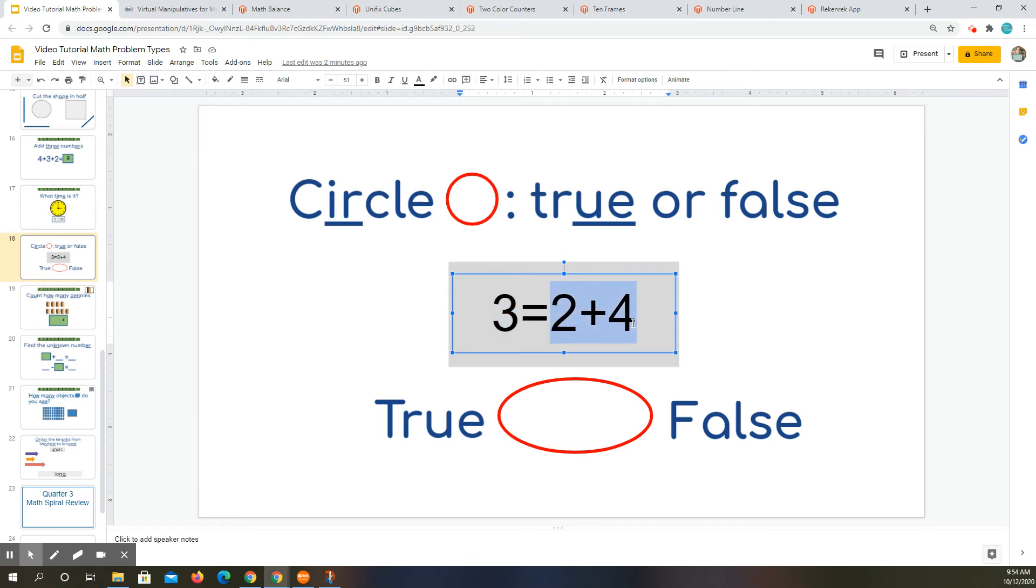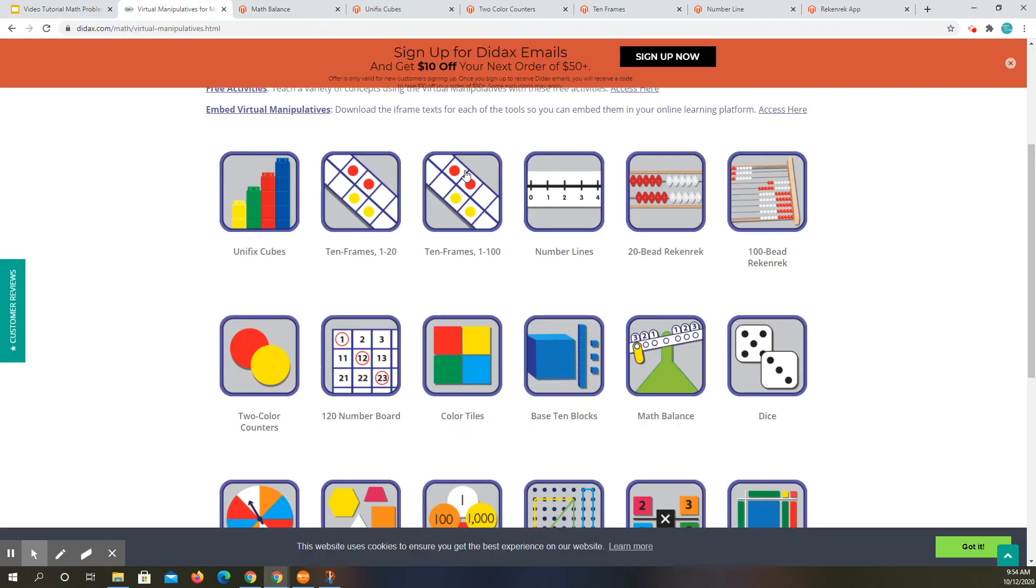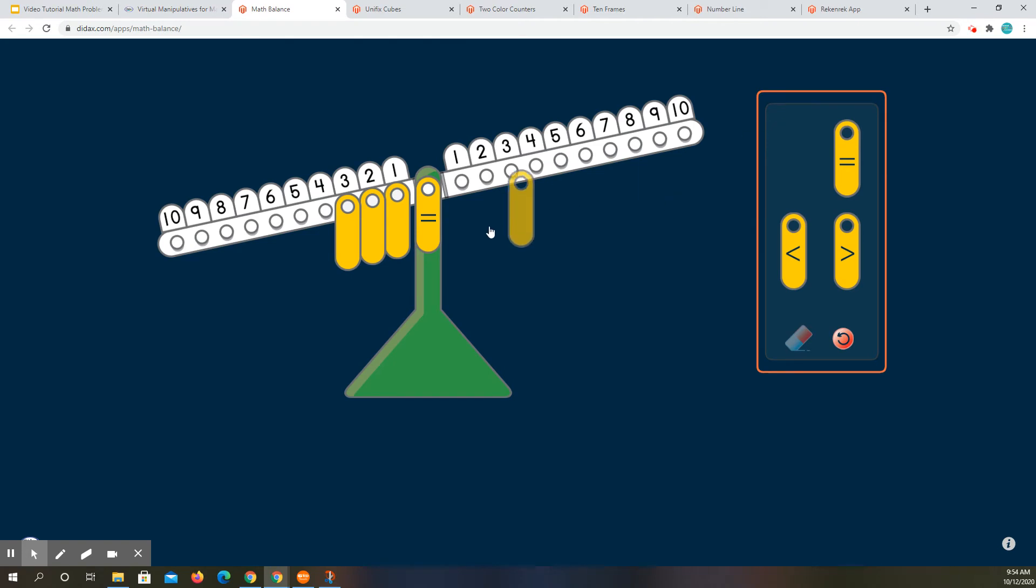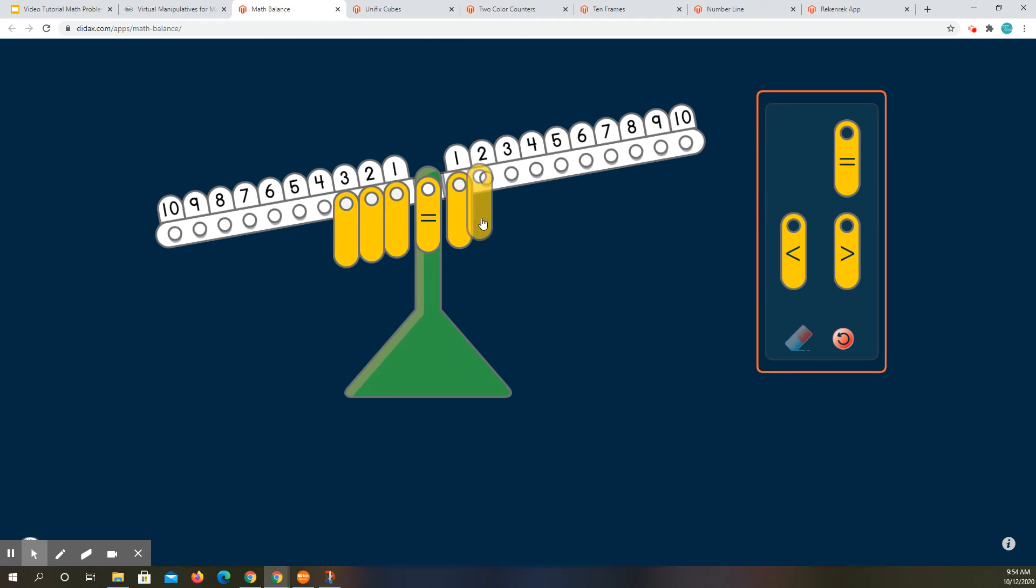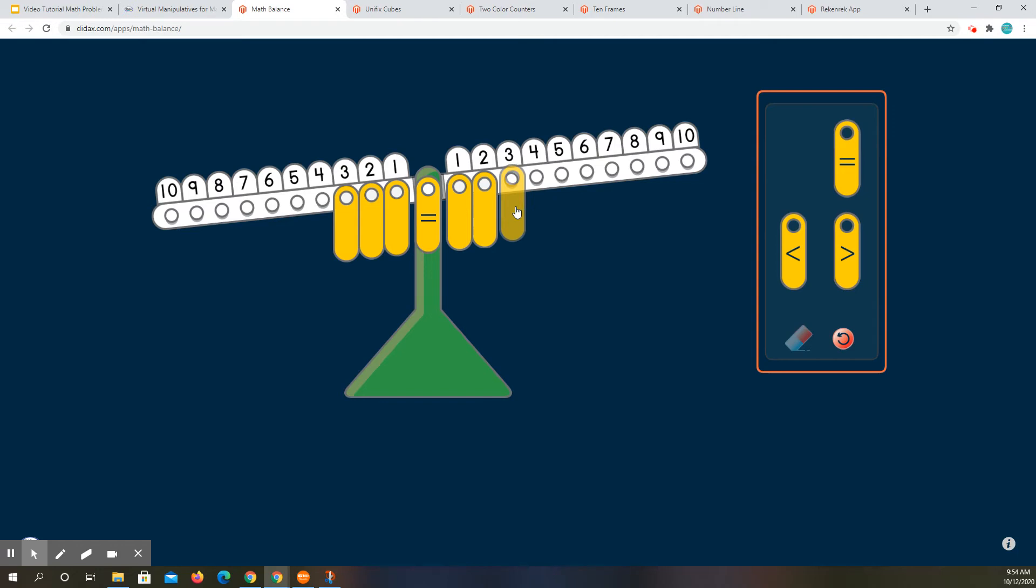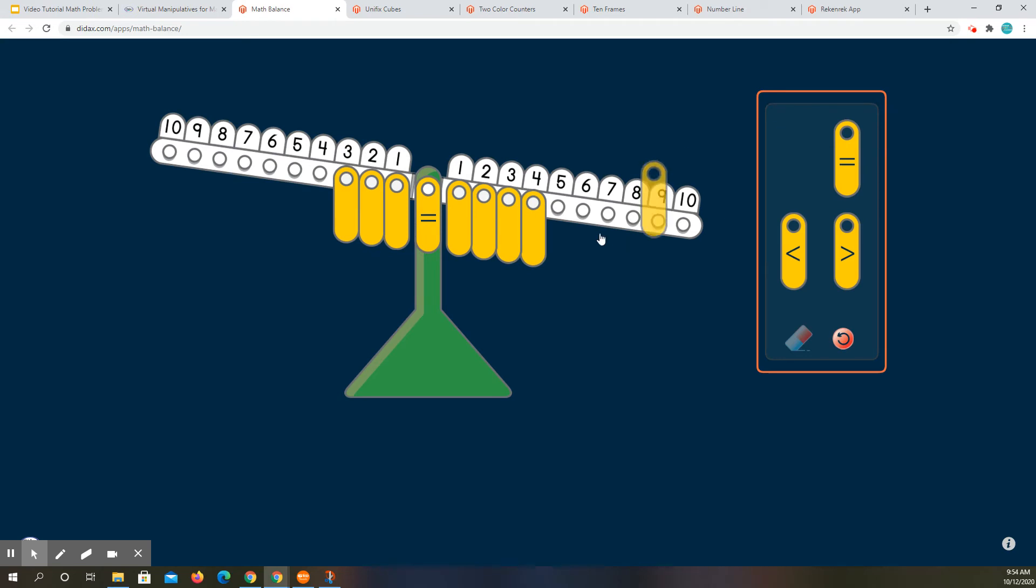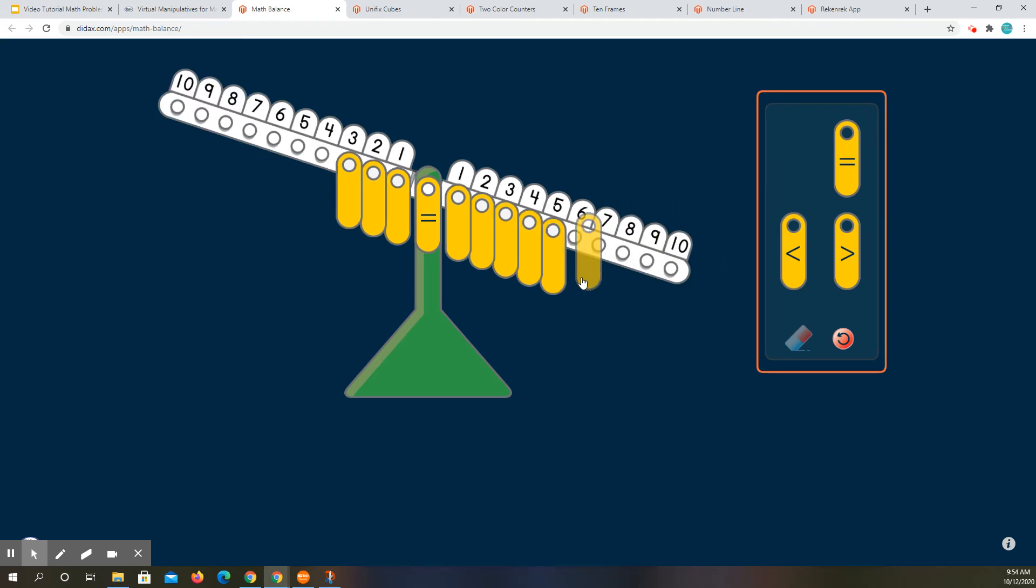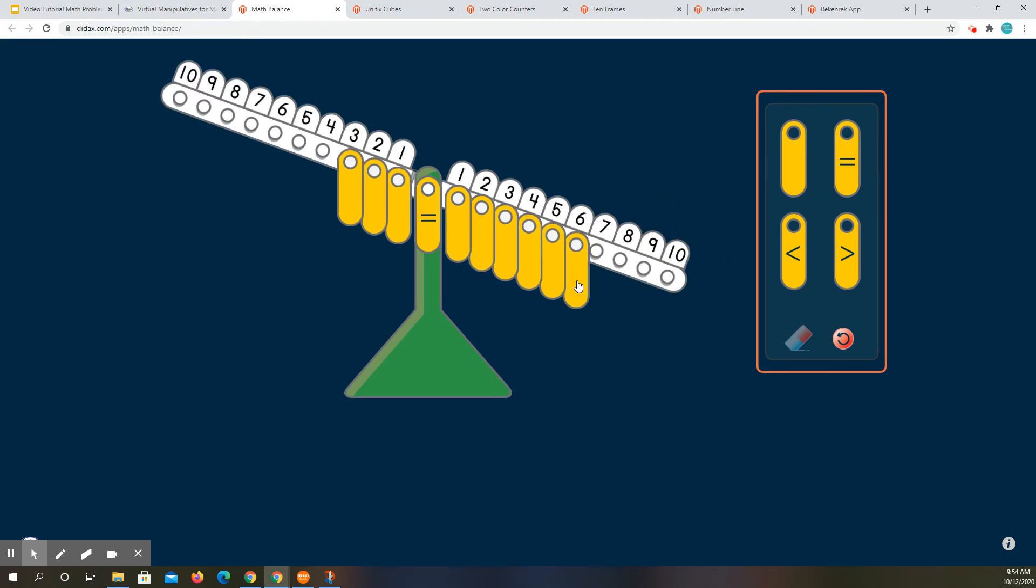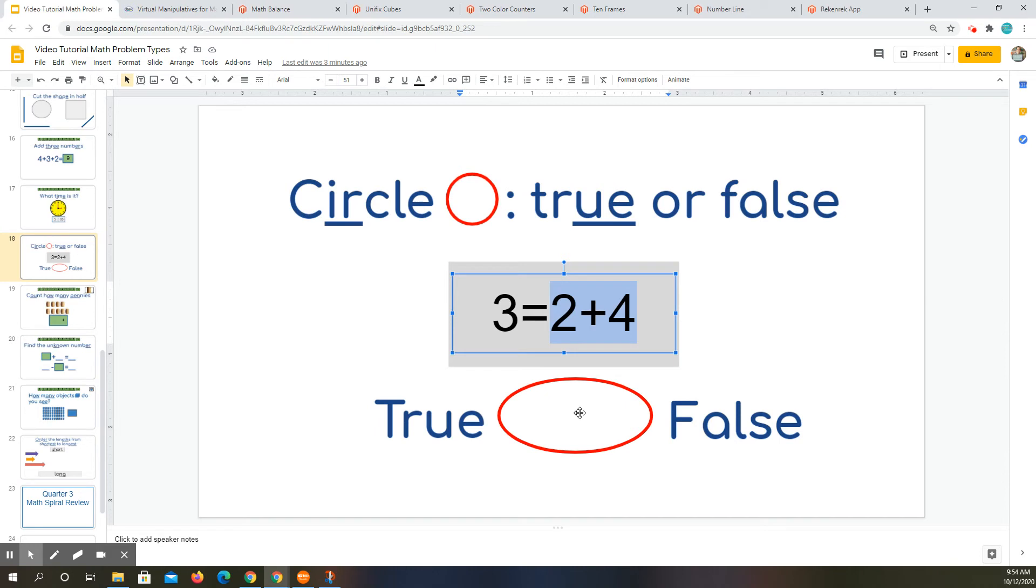Now over here I have 2 plus 4. So 1, 2 plus 1, 2, 3, 4. And so we look at this. Is this balanced? No. And so we know that the equation must be false.